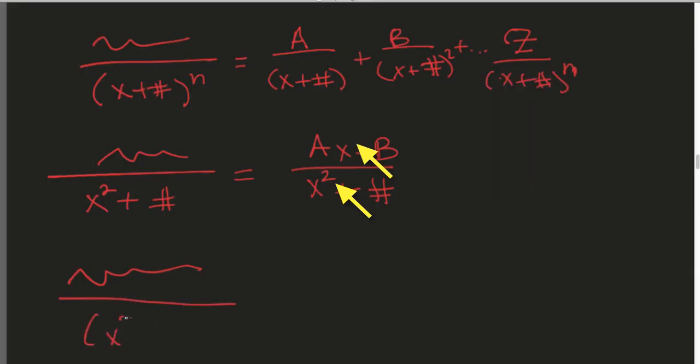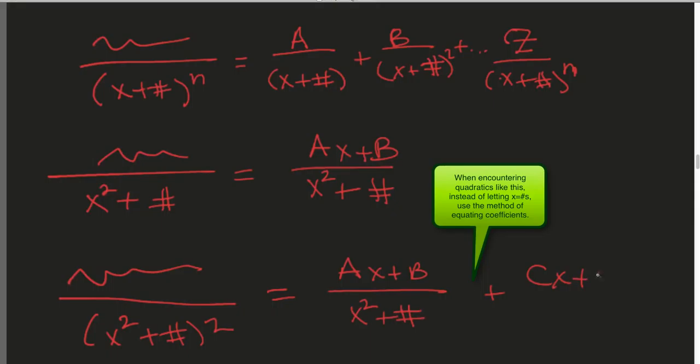And then the last one is just a combination of the previous two. I'll just go squared because usually you won't see it more than squared. It's going to be AX plus B for the first power, and then CX plus D for the second one.